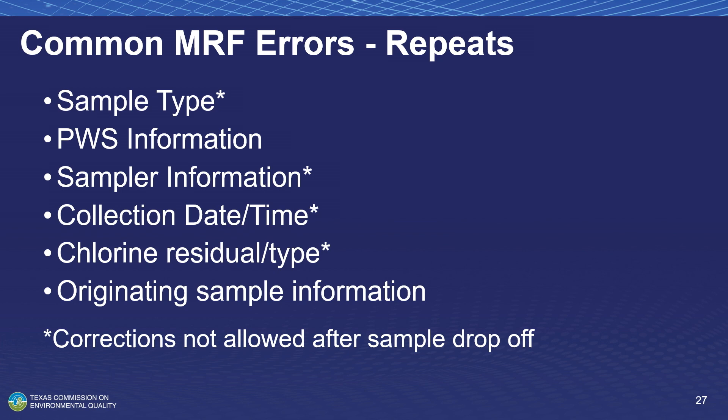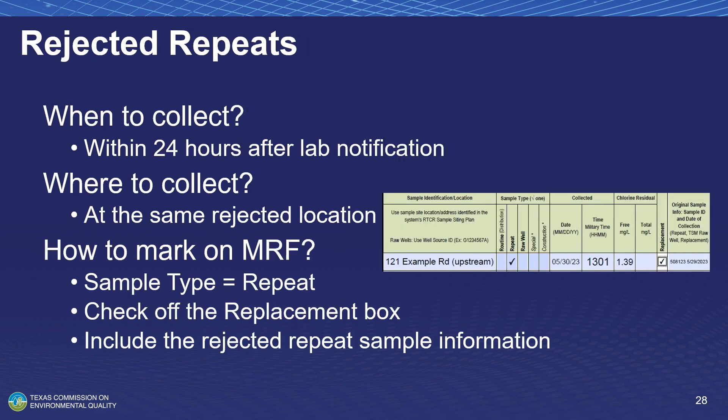Some of the most common errors are with sample type — especially on repeat samples, make sure this information is accurate. For rejected samples: if you drop your repeats off and they're rejected, the lab has 24 hours to notify you of that rejection. Then you go out and recollect at the same point where the rejection occurred, marking that sample as both repeat and replacement on the MRF. Make sure you're fully documenting all of this so we can follow the paper trail and confirm all resampling requirements were met.